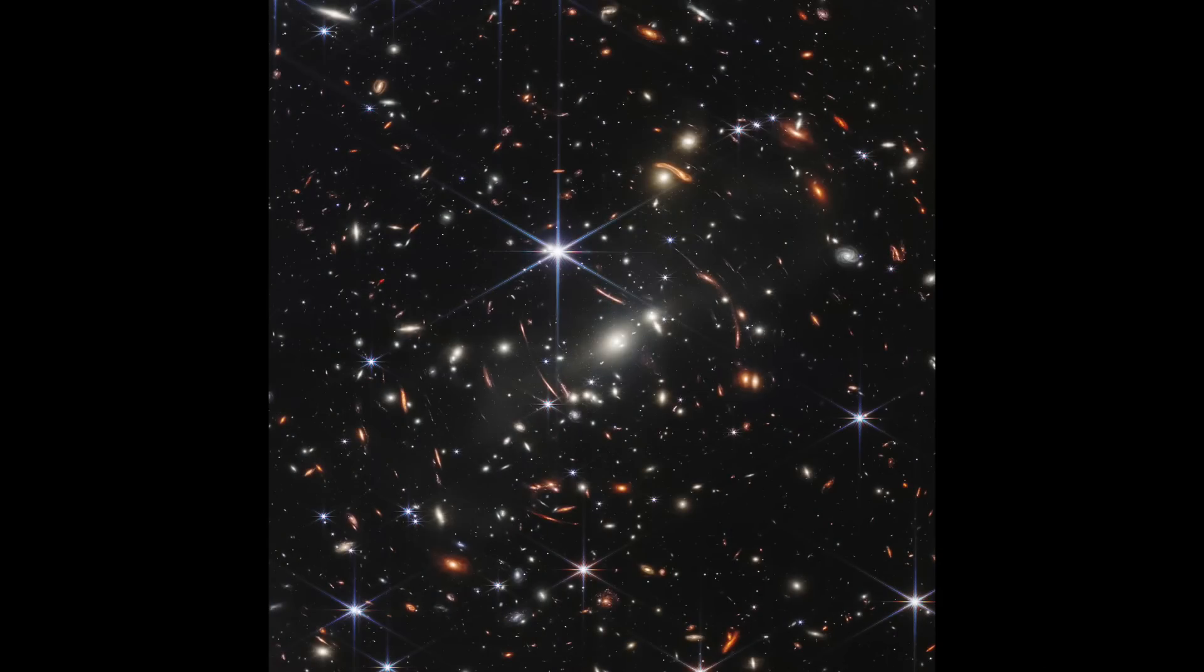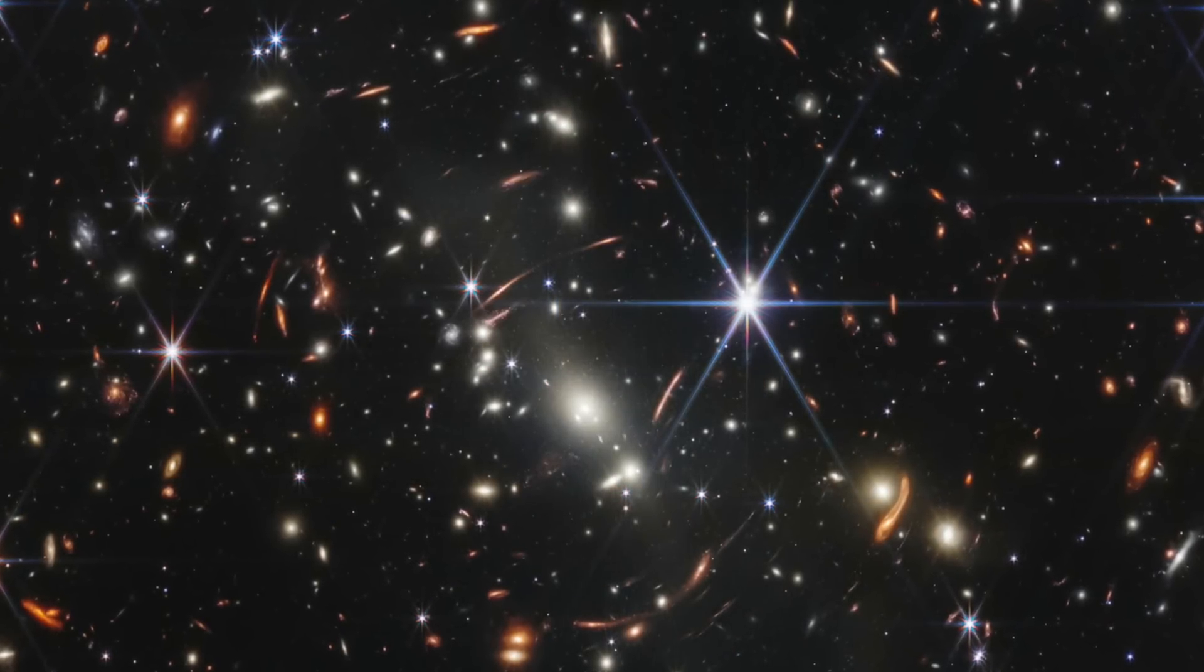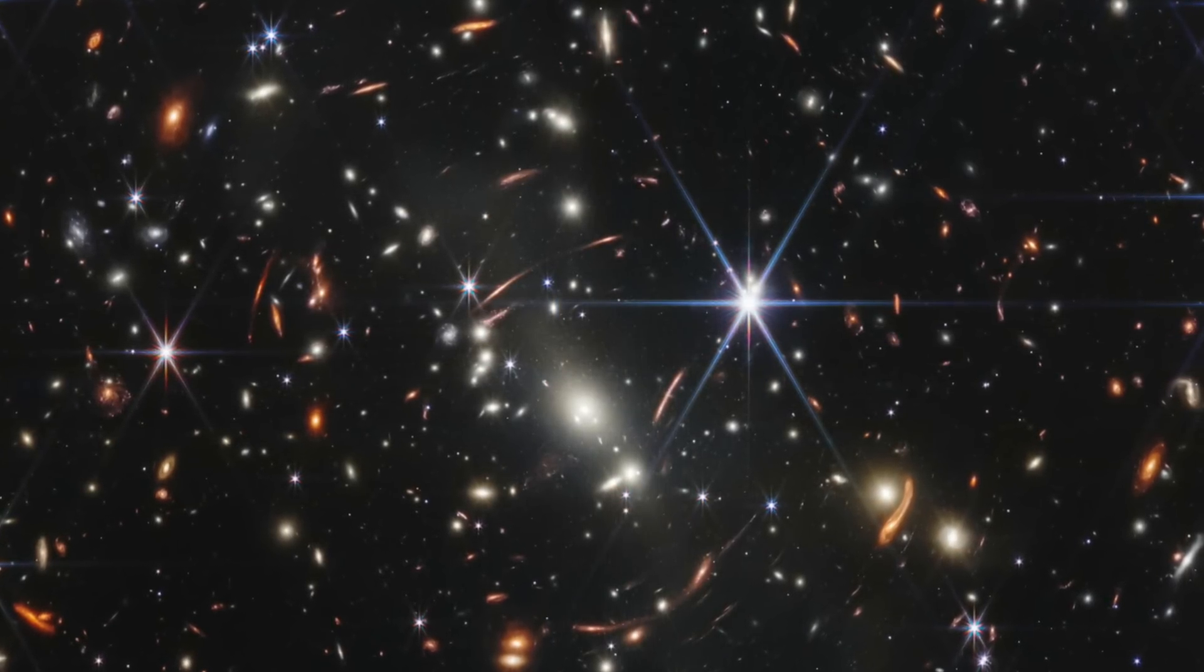NASA's Webb delivers deepest infrared image of universe yet. The James Webb Telescope also captured an infrared image of SMACS-0723, which is a galaxy cluster filled with a myriad of various galaxies. The JWST went a step further by highlighting some of the faintest objects in space ever captured.